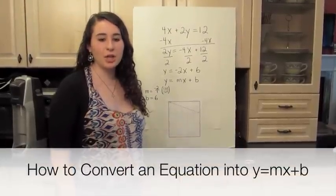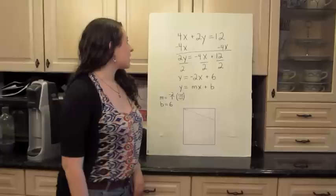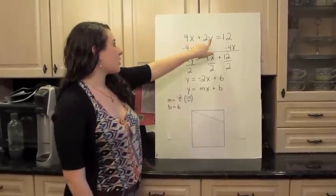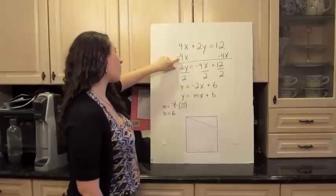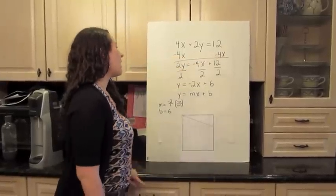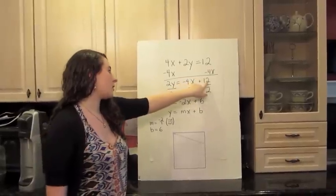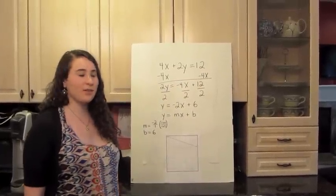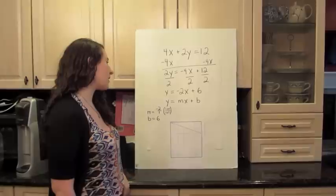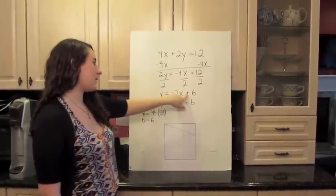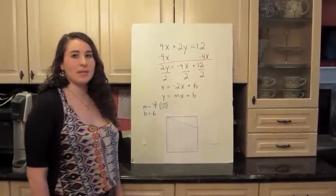Today I will be teaching how to convert an equation into y equals mx plus b form. The equation we will be using today is 4x plus 2y equals 12. The first step is additive inverse. You subtract 4x and 4x. The answer to this is 2y equals negative 4x plus 12. Then using the multiplicative inverse, you divide every term by 2. The answer to that is y equals negative 2x plus 6. Now you have it in y equals mx plus b form.